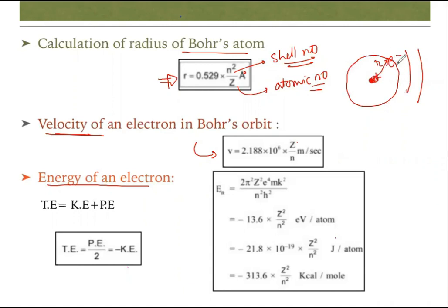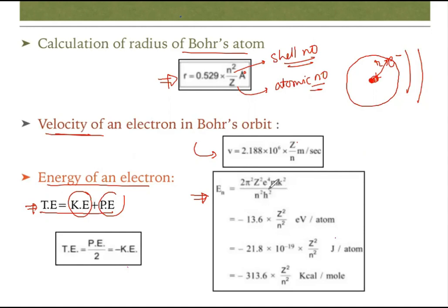Next is energy. As the electron is revolving, it must have total energy — kinetic plus potential energy. The full expression is En = 2π²z²e⁴m k² / (n²h²). However, substituting all constant values — h, k, m, e — gives the simplified formula: En = −13.6 z²/n² electron volts. You must remember this formula to solve numerical problems.